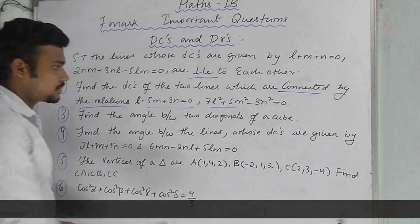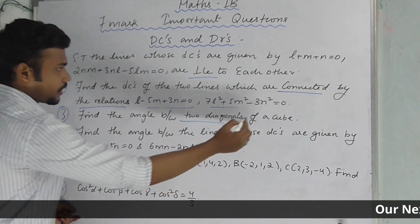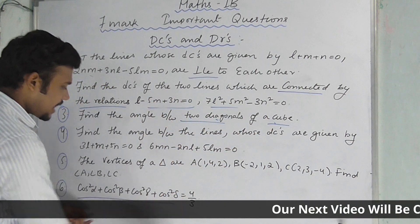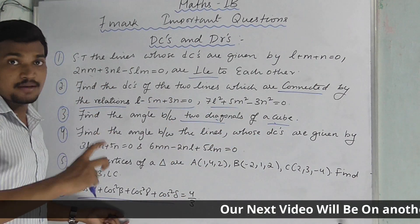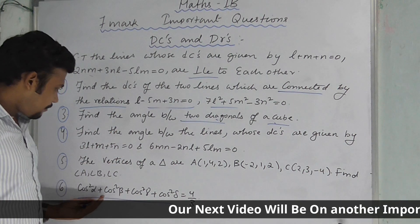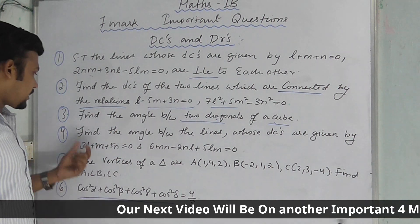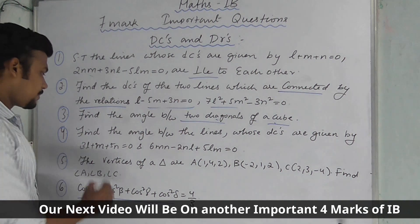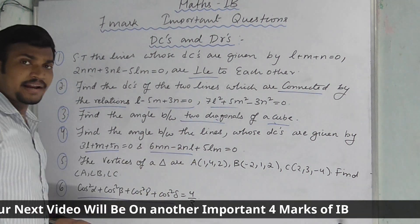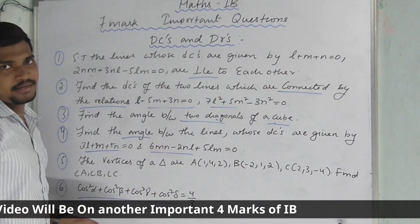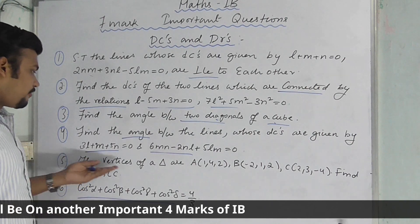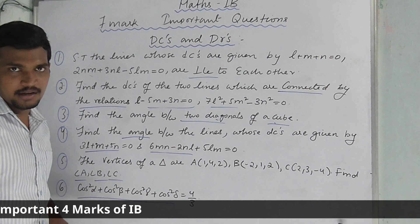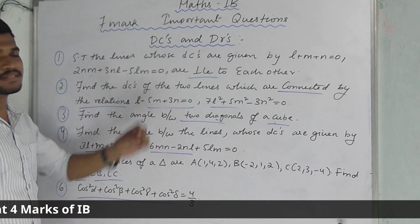Find the angle between the two diagonals of a cube — this is a very important model. Same model, same type of sums — these two are very important. Next, find the angle between the lines whose DCs are given by two relations. We also have: if the vertices of a triangle are A, B, C, find the angles. These are the important questions from DCs and DRs.